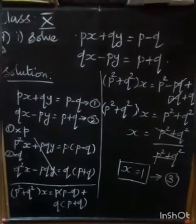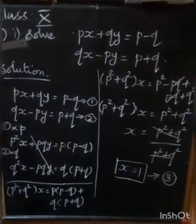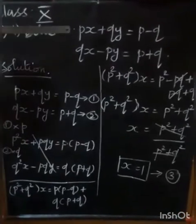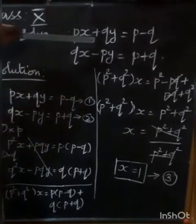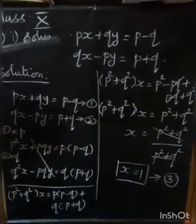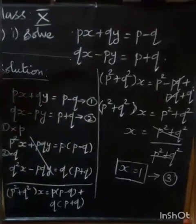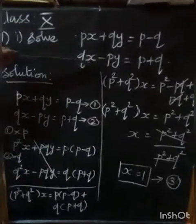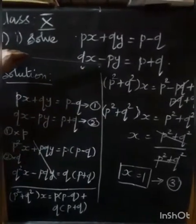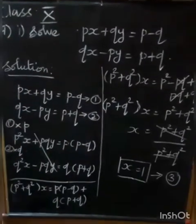Exercise 3.7, sum 1. Solve: PX plus QY equals P minus Q. Second equation: QX minus PY equals P plus Q.